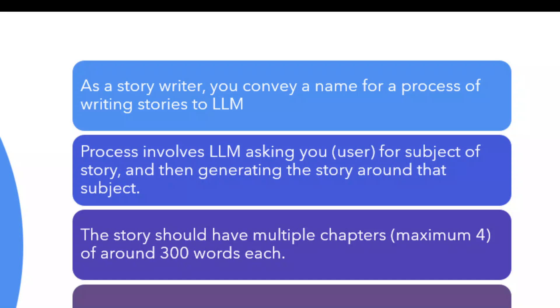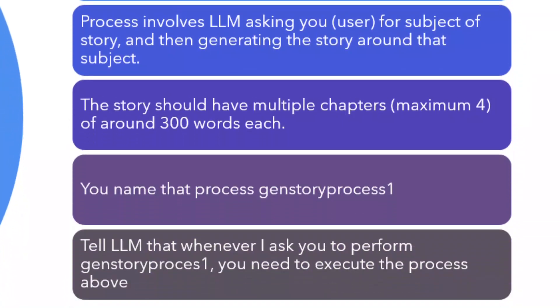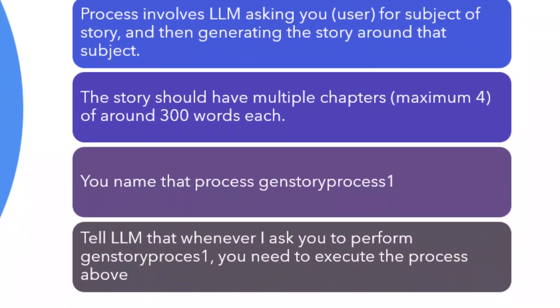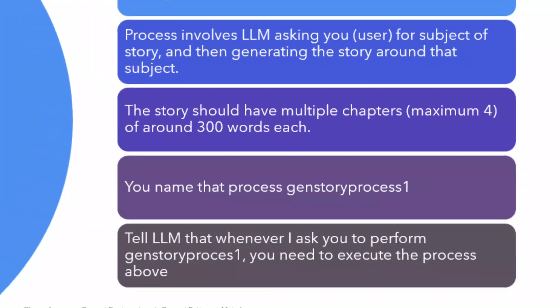The story should have multiple chapters — a maximum of four — of maximum 300 words each. You name that process "gen story process one." So you can tell ChatGPT that whenever I ask you to perform gen story process one, you need to execute the process above. This is another way of meta-language creation.